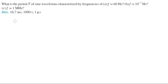For more videos visit ForTheSakeOfEducation.com. Alright guys, let's do this problem that says what is the period T of sine waveforms characterized by frequencies of 60 Hz, b 10 to the negative 3 Hz and c 1 MHz.